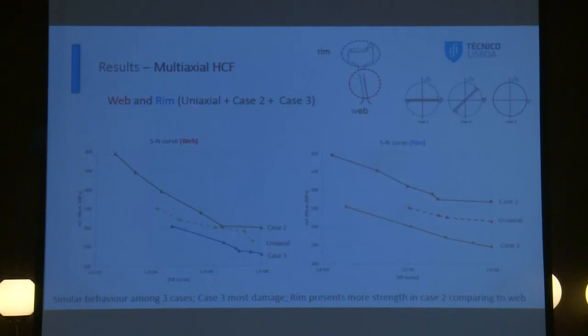Now, regarding multi-axial HCF tests, we are doing comparison between the specimens taken from the rim and from the web. We are performing the three cases that appear here. There's a similar trend between the rim and the web, as you can see here. We also can see that case 3 is the most damaged case that appears here. We can say comparing the rim and the web that the rim presents more strength in case 2. We can say that the rim presents more strength than the web.